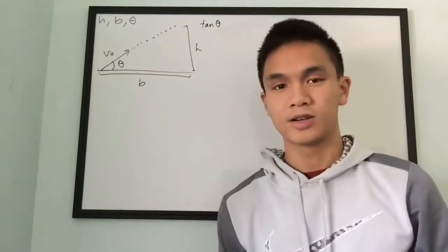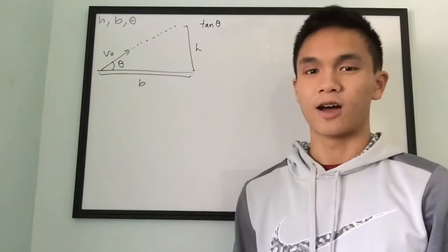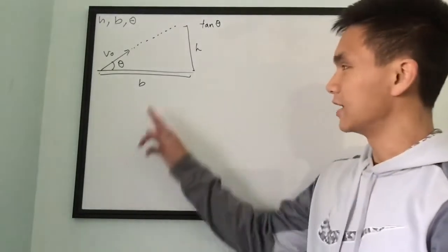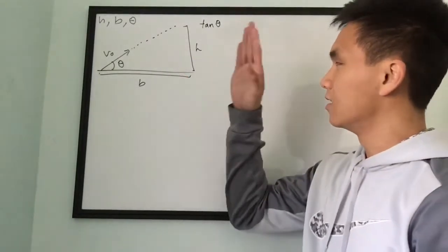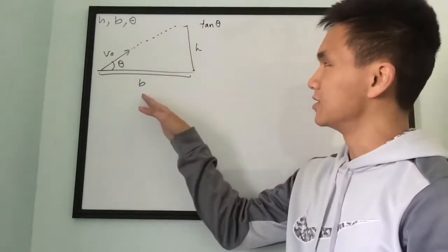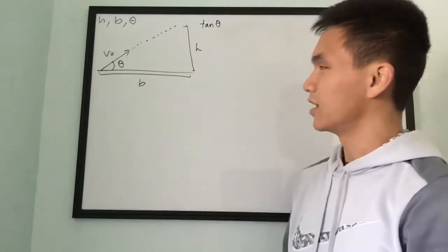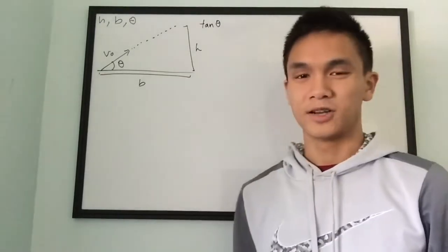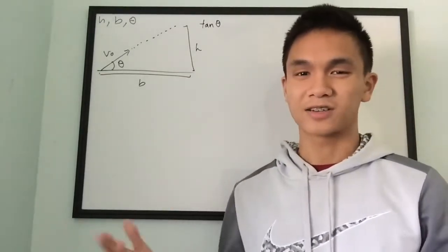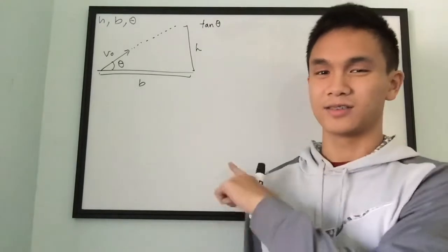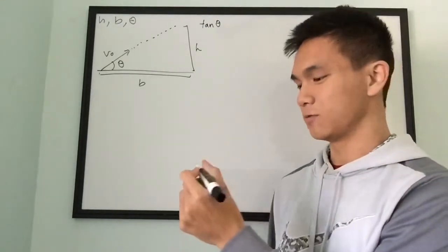An initial incorrect thought would be to assume that h is the opposite side and b is the adjacent side — so tangent of theta is just opposite over adjacent. That is actually wrong, and mathematically, this is why it's going to be wrong.